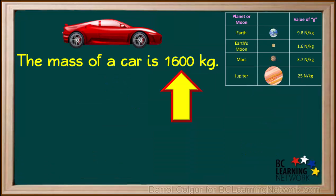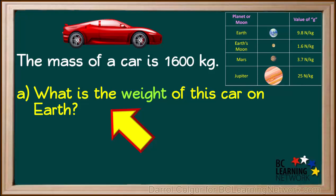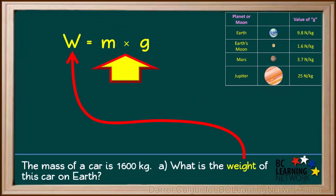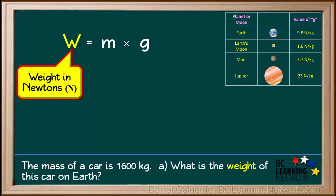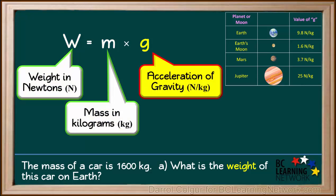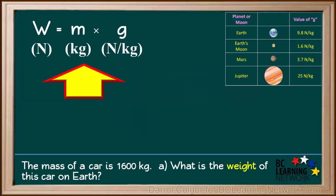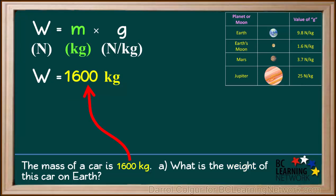Let's do a couple of questions. We are given that the mass of a particular car is 1,600 kilograms. Question A asks us for the weight of this car on Earth. To calculate weight, we use the formula w equals m times g, where w is the weight in newtons, m is the mass in kilograms, and g is the acceleration in newtons per kilogram. We substitute 1,600 kilograms for the mass and 9.8 newtons per kilogram for g on Earth.